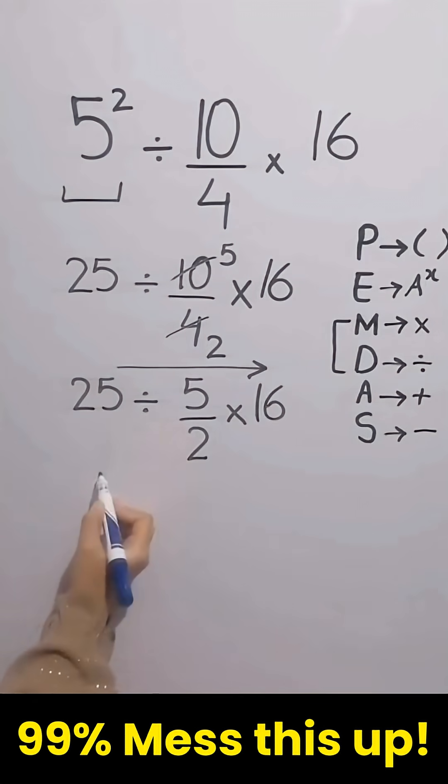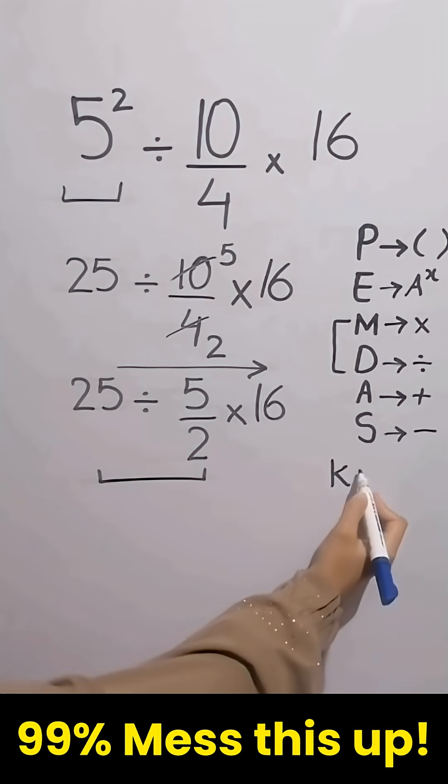So we start with the expression 25 divided by 5 over 2. Whenever we see a division sign between two terms, the best thing to do is to apply the KCF rule. K stands for keep, C stands for change, F stands for flip.